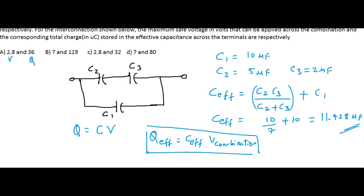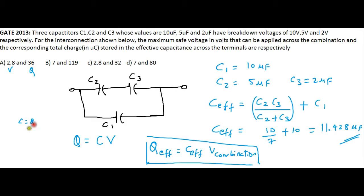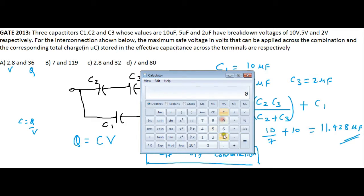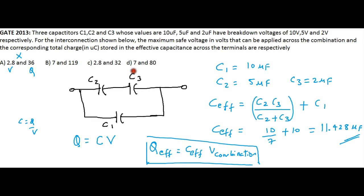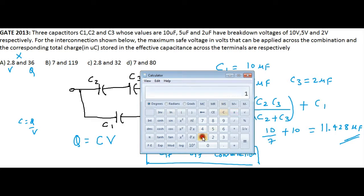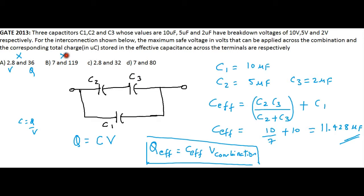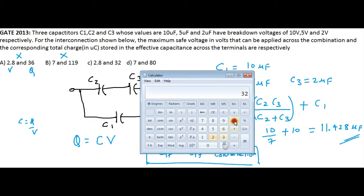Using C = Q/V: for option A, the capacitance is 36/2.8 = 12.85 µF, which does not match the effective capacitance, so option A is wrong. For option B, 119/7 = 17 µF — also wrong. For option C, 32/2.8 = 11.4285 µF, which matches the C effective. So we may go with option C.